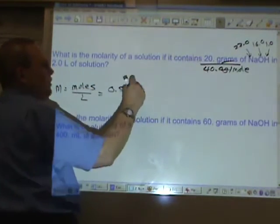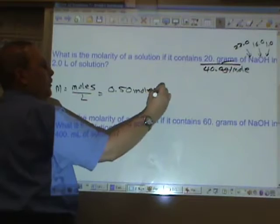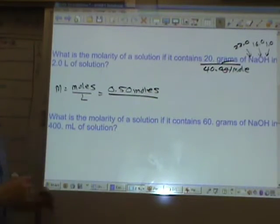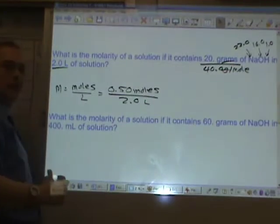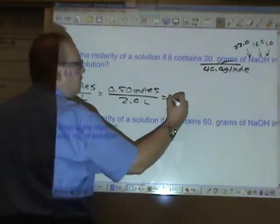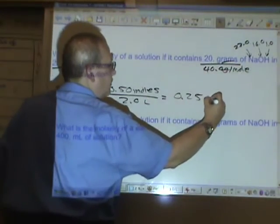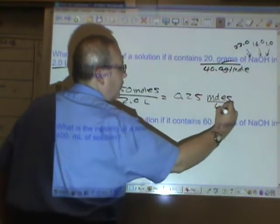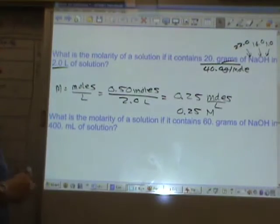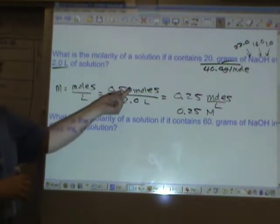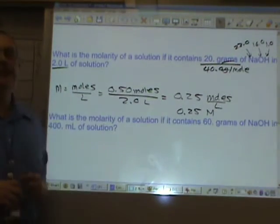Two sig figs, three sig figs, two sig figs, 0.50 moles. Divided by, oh, they gave us liters. 2.0 liters. 0.5 divided by 2? 0.25 moles per liter. Or you could say 0.25 molar. Again, two sig figs, two sig figs, two sig figs in the answer.